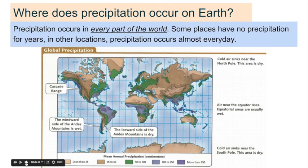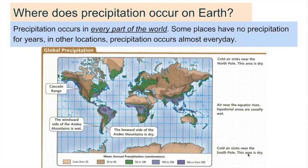Where does precipitation occur on Earth? Precipitation occurs in every part of the world. Some places have no precipitation for years; in other locations, precipitation occurs almost every day. Near the equator you can see lots of purple on the map — the key shows mean annual precipitation in centimeters, with more than 250 centimeters at the equator. Cold air sinks near the North Pole, making that area dry; sinking air does not cause precipitation. The South Pole is the same.